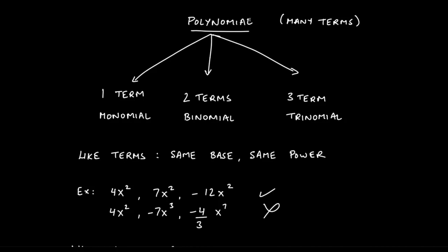If you have one single term that's called a monomial. If you have two terms that's called a binomial — like a bicycle has two wheels. A trinomial has three terms — like a tricycle has three wheels. If you have more than three terms, that gets called a polynomial. So polynomial specifically means more than three terms, but polynomial also covers all of these — any algebraic expression that is a monomial, binomial, trinomial, or more than three terms is called a polynomial.